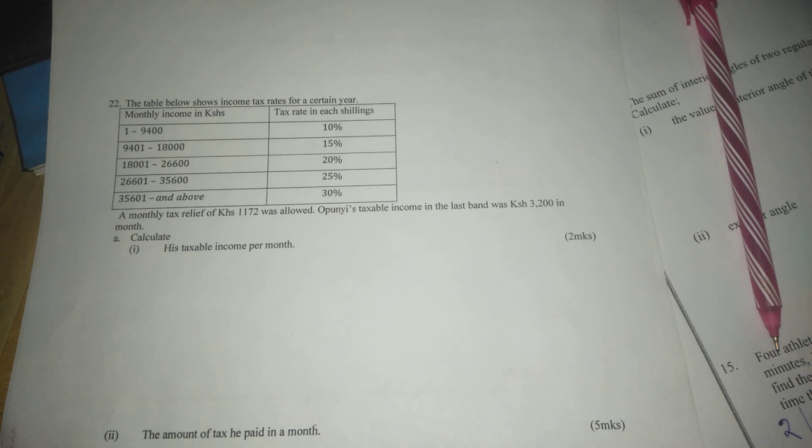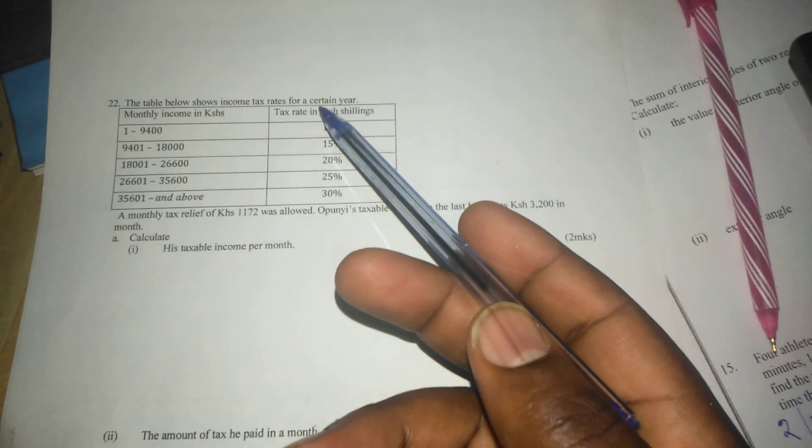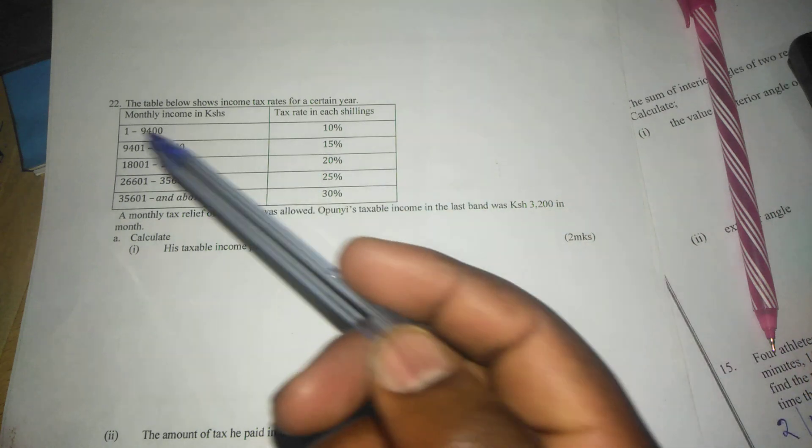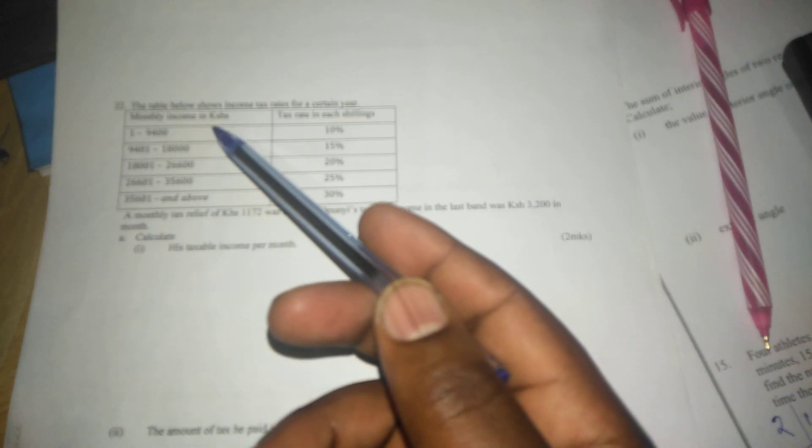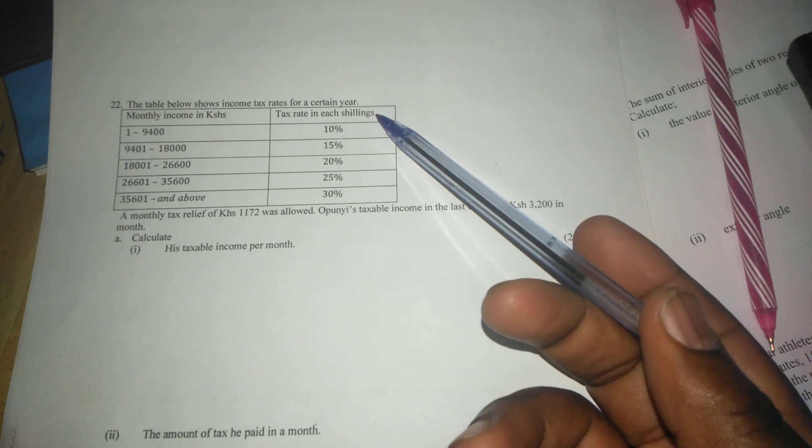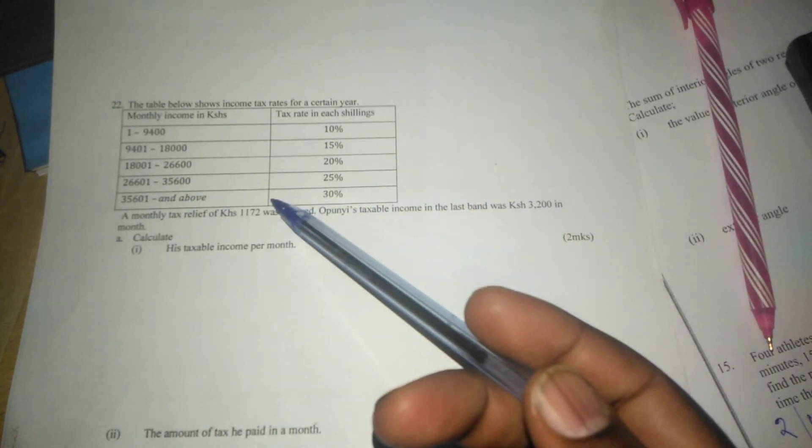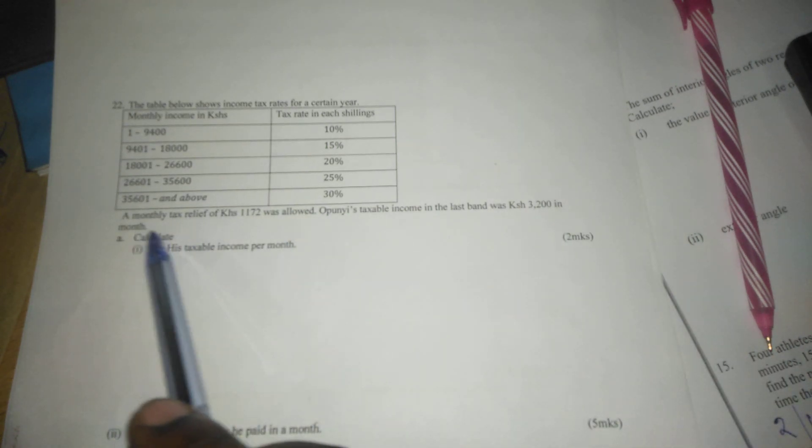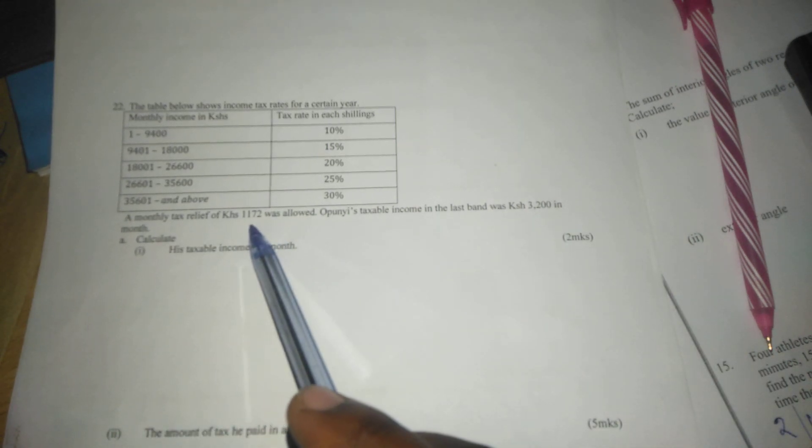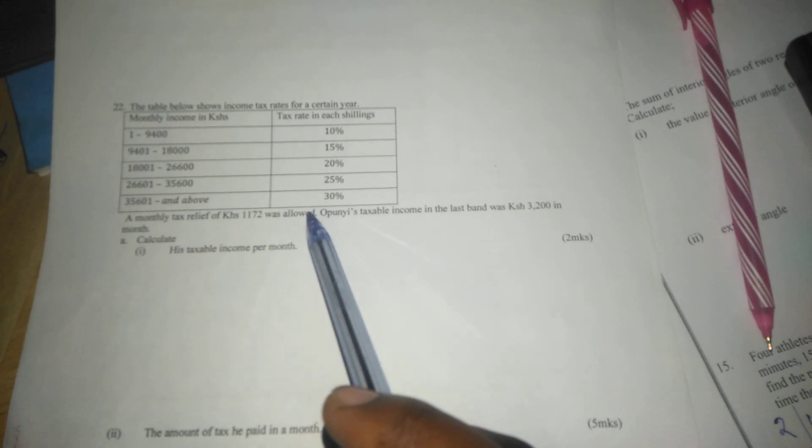Welcome to today's lesson. We're going to study income tax. The table below shows income tax rates for a certain year. We're given monthly income in Kenya shillings and the tax rates in percentage form for all the brackets. A monthly tax relief of 1,172 was allowed.